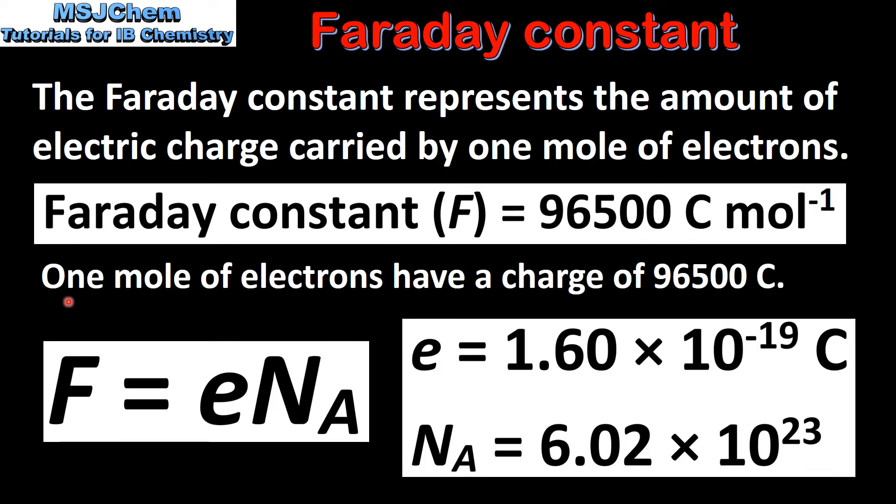This tells us that one mole of electrons have a charge of 96500 coulombs. The Faraday constant is equal to the charge on one electron multiplied by the Avogadro constant. The charge on one electron is 1.60 times 10 to the negative 19 coulombs, and the Avogadro constant is equal to 6.02 times 10 to the power of 23. These two values multiplied together give us the Faraday constant.